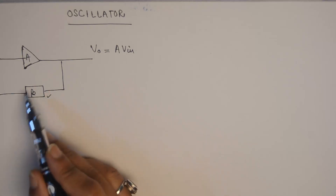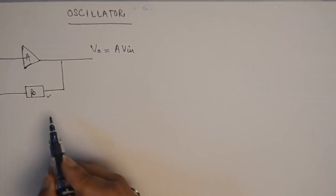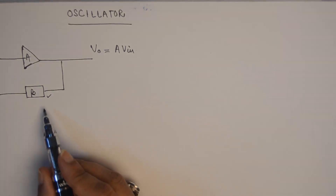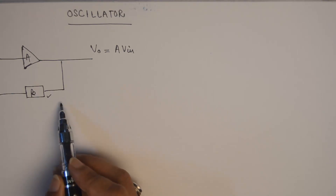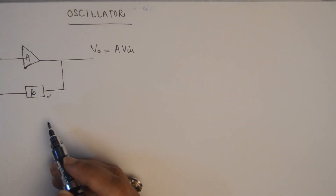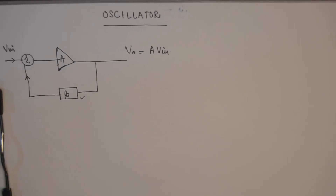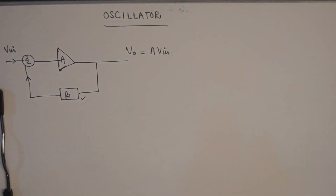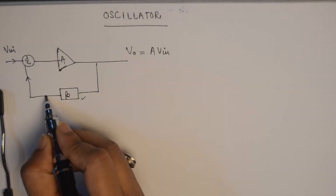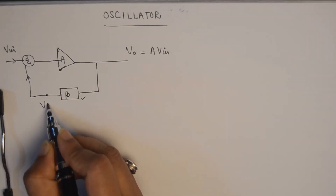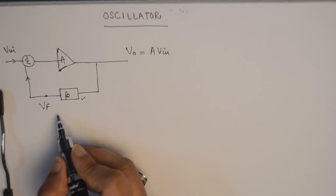This being a frequency selective circuit, it will provide a zero phase shift to a particular frequency and it will provide different values of phase shifts to the other components of the signals. Now at this point, let us say we have a voltage signal which is being fed back to the input, and I name it as Vf.